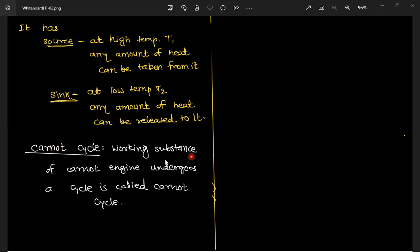Now what is the Carnot cycle? The working substance of the Carnot engine undergoes one cycle — that cycle is called the Carnot cycle. So we have seen what the Carnot engine consists of: the source, the sink, and the Carnot cycle.